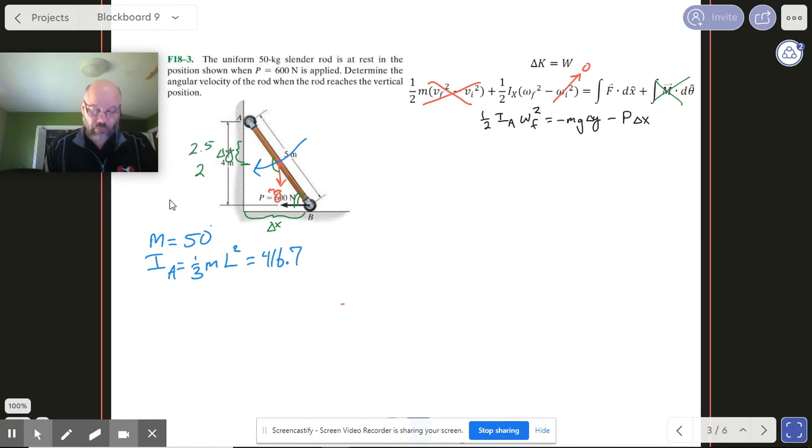So our Delta Y, we're going from a height of 2 to a height of 2.5, which means that our Delta Y is a plus 0.5. Okay, so we've got a negative, it's downward, it's moving upward, so overall that's a negative amount of work, which is cool because the thing is going uphill. We expect things going uphill to slow down, so that takes away from our kinetic energy. So that works out.